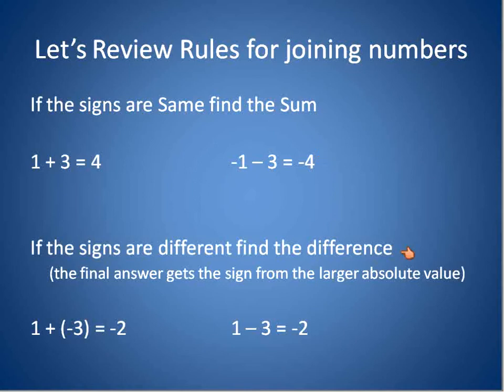If the signs are different, you find the difference. 1 plus negative 3, see how the signs are different? This is a positive number and a negative number. So we join those together by subtracting. 3 minus 1 is 2. So the difference between them is 2. And you take the sign from the larger absolute value.